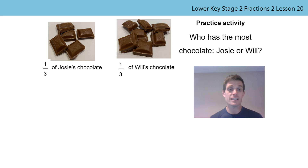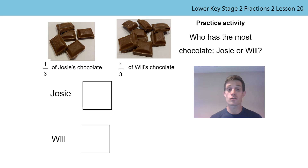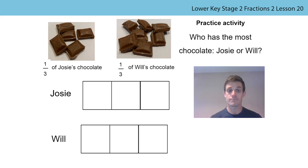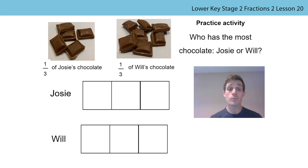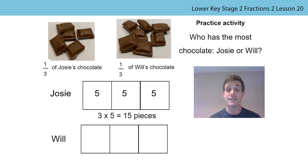So we've got our pictures here. A third of Josie's chocolate is shown and also a third of Will's chocolate is shown. In both cases, the part is a third, so that means the whole must be three times as much. Josie has one, two, three, four, five pieces of chocolate as one third. So five pieces is her part, meaning all of the parts must be five. So we do three times five, and Josie had 15 pieces of chocolate.